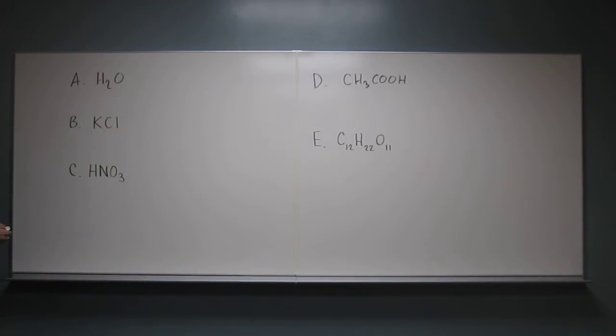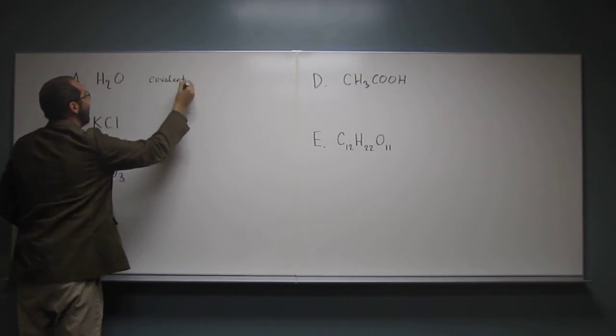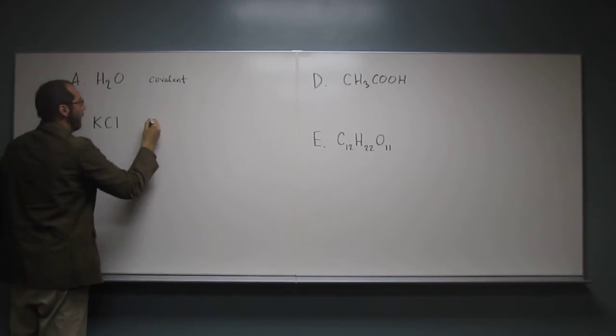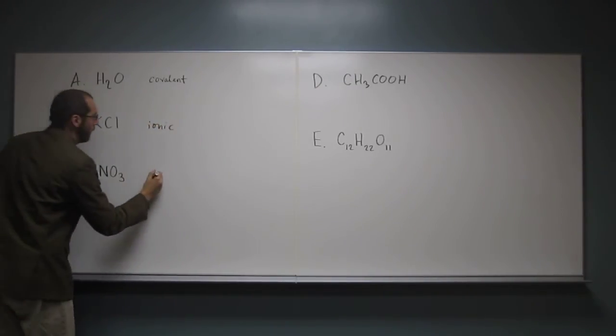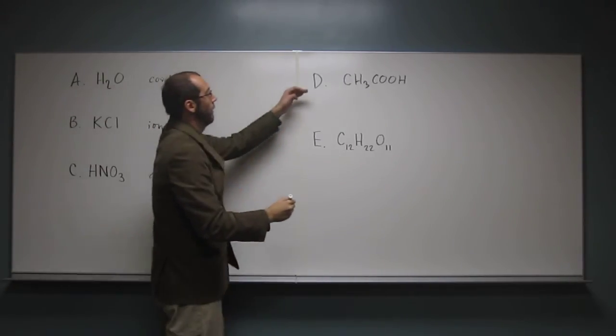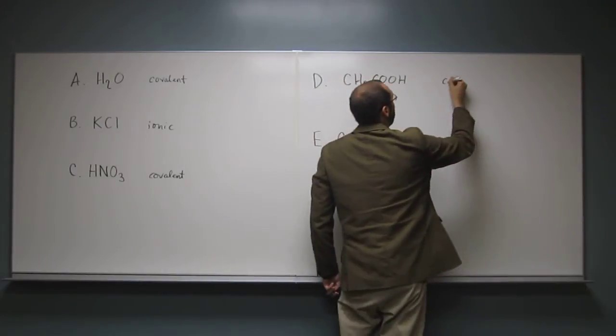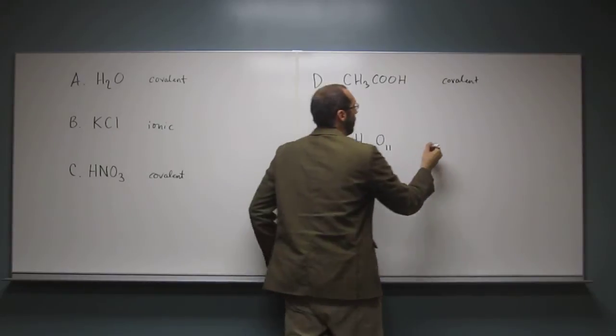Okay, so let's go through these. And I know you can do these, so we'll just go through them really quick. So what is this one? Covalent. And the next one? Ionic. The next one? Covalent. The next one? Covalent. And the next one? Covalent.